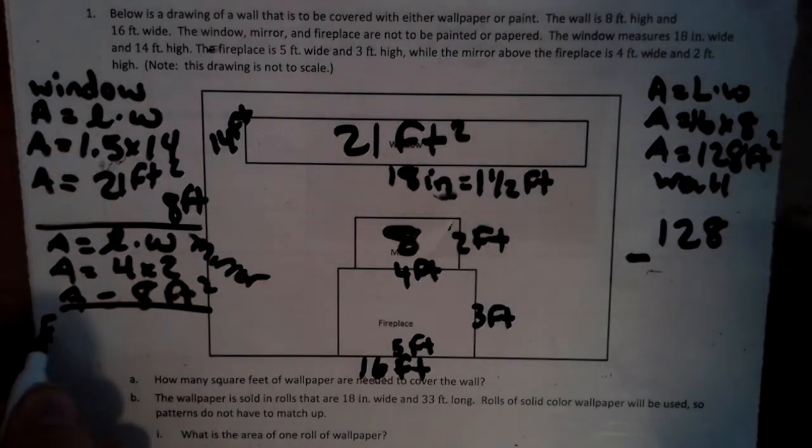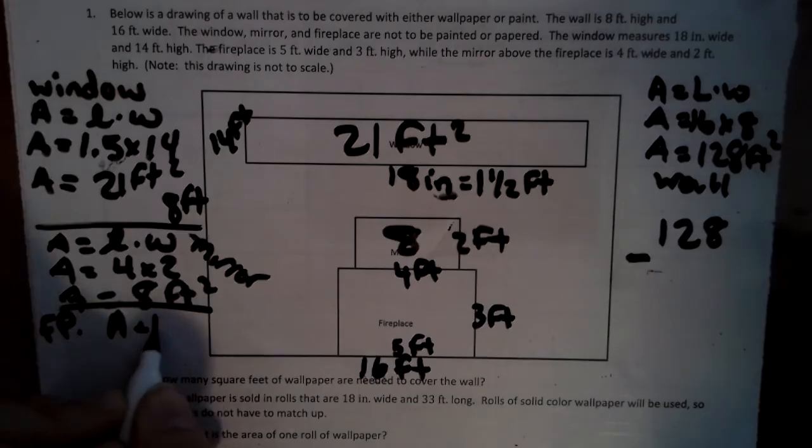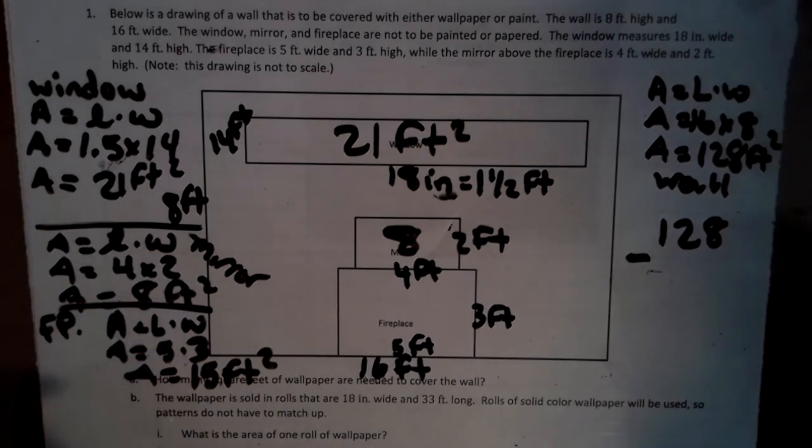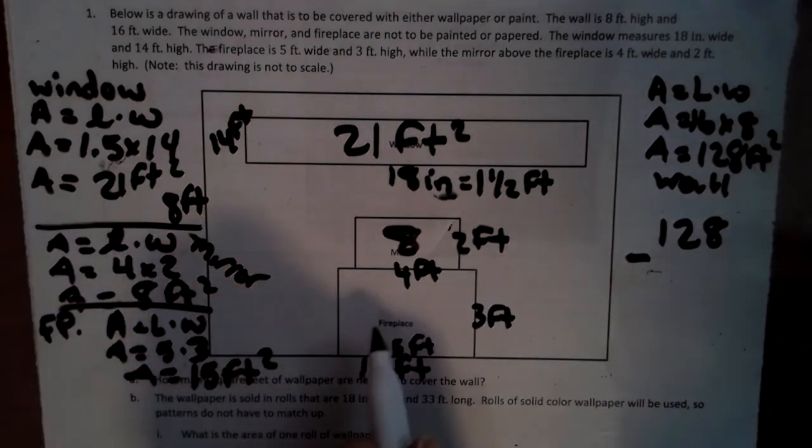And now we have the fireplace. So I'm just going to put FP. Fireplace area equals length times width. Area equals 5 times 3. Area equals 15 feet squared. All right, now we can easily find out all these pieces.